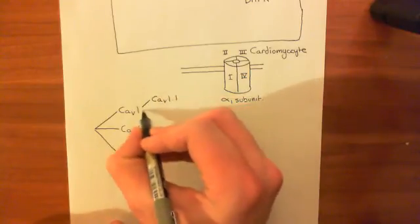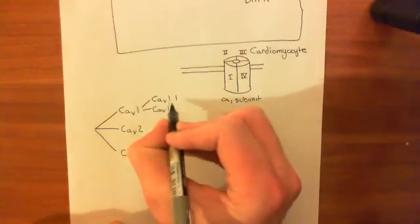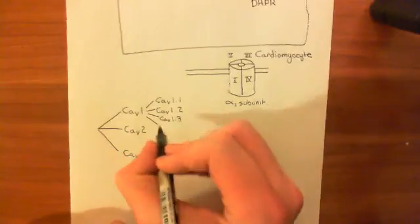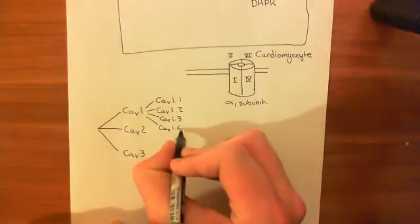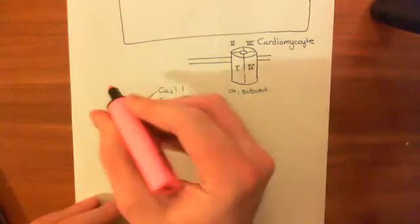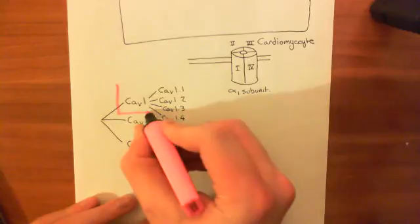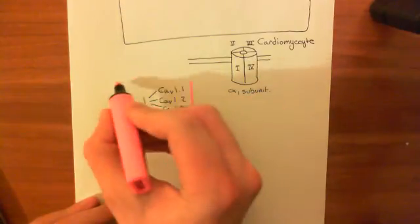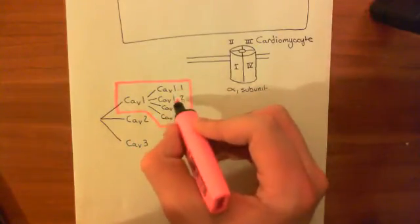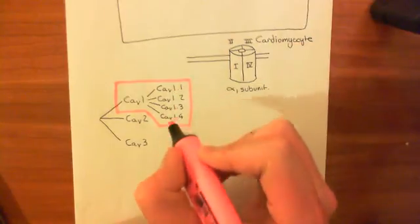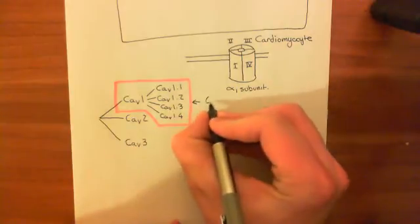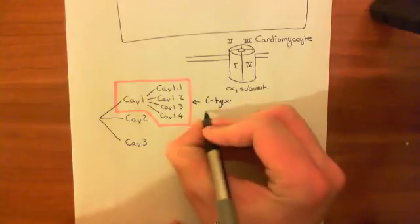The CAV1 family has four different genes: CAV1.1, CAV1.2, CAV1.3, and CAV1.4. If you are an L-type voltage-gated calcium channel, it means that your alpha-1 subunit is encoded by a gene in this CAV1 family, i.e., encoded by one of these four genes, CAV1.1 through CAV1.4.